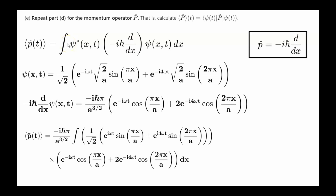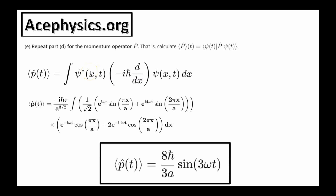Part E asks for the average value of momentum p — the average momentum of a particle starting in a linear combination of the first two eigenstates of the infinite square well. To get the expectation value of any quantity in quantum mechanics, you take psi star, apply the operator, then psi. For position we had psi star x psi; for momentum we insert the momentum operator minus i h-bar d/dx. Taking the derivative of psi gives an expression, and then psi star times that expression is integrated to yield the average value of p as a function of time.